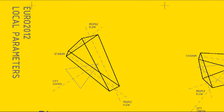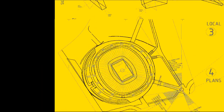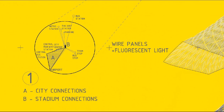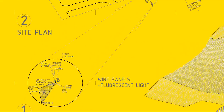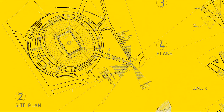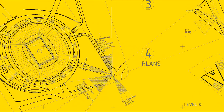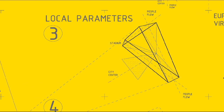It gives unique parameters for every city. On this schema we can see the sum of city and stadium connections related to the Warsaw context, and how it is related to local connections and how the final parameters are formed, depending on pedestrian flows and directions of strategic points.